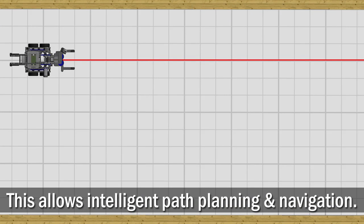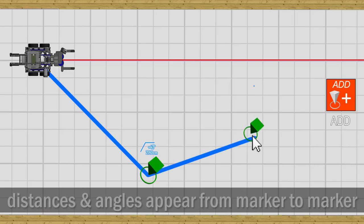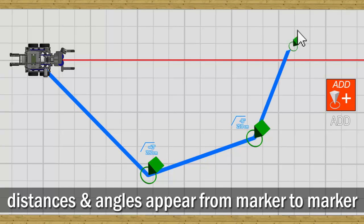Using the tool is straightforward. Simply click on a spot in the world, and a marker will appear along with its distance and angle from the robot, or the previous marker in the sequence.